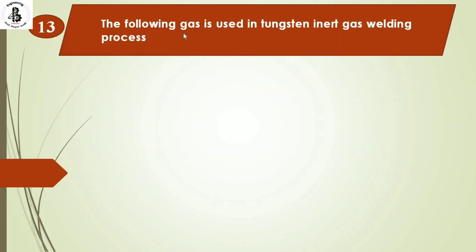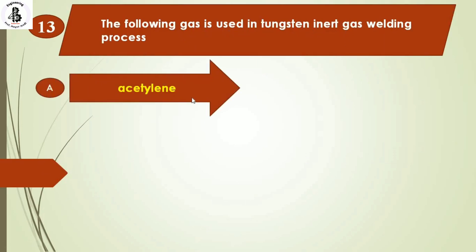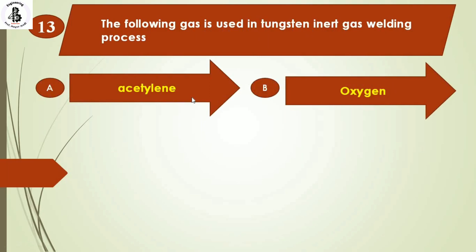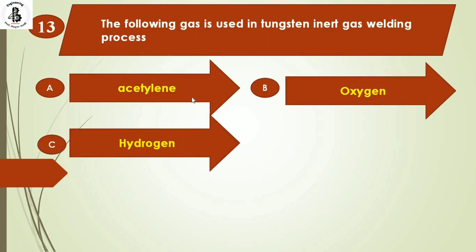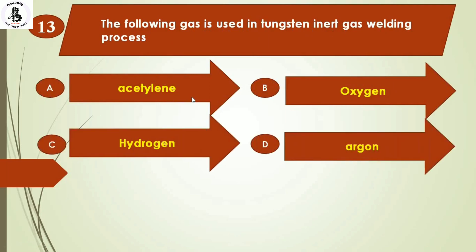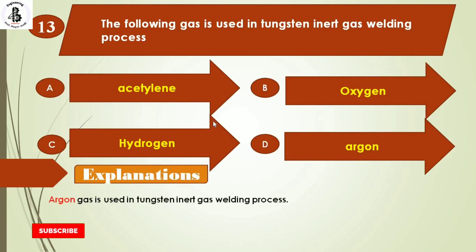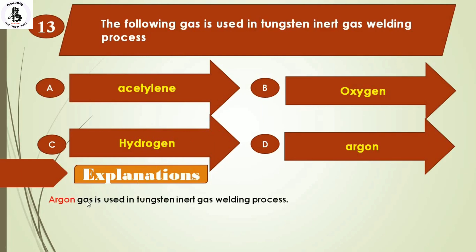The following gas is used in the tungsten inert gas welding process: Option A: acetylene. Option B: oxygen. Option C: hydrogen. Option D: argon. For the TIG welding process, or MIG welding process, argon is used as the inert gas. So the right answer is option D: argon.